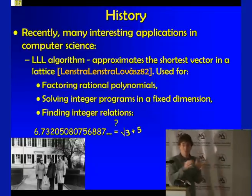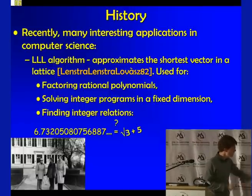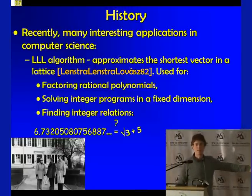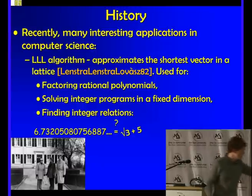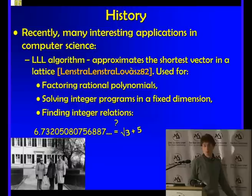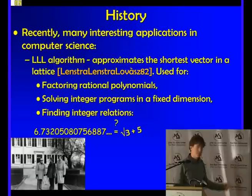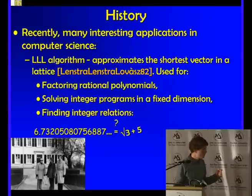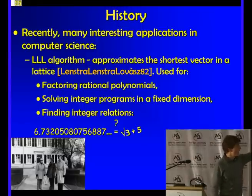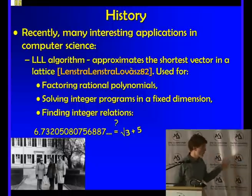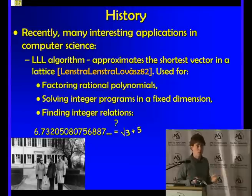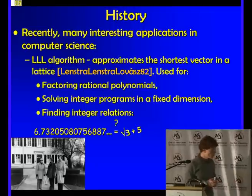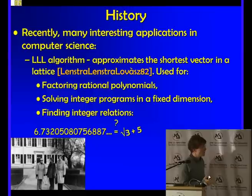Factoring polynomials over the rationals means you can factor a polynomial into lower-degree polynomials. Another cool application: assume you have some numerical calculation and end up with the number 6.73205, and you wonder if it's a nice number — maybe a square root of something? It turns out this is the square root of 3 plus 5. Using the LLL algorithm you can identify any algebraic number. Last week I computed a complicated integral numerically and was happy to find out it's the square root of the square root of 5 plus 4.